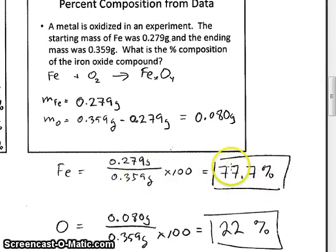The oxygen mass, because it was found by subtraction, would give us only two significant digits. So we would divide that mass of 0.080 grams by the mass of the total compound, 0.359 grams, to calculate a percentage with two significant digits of 22% oxygen in this compound.